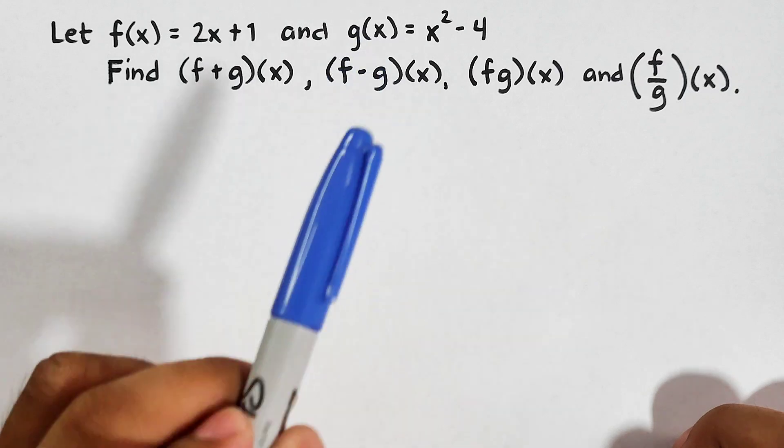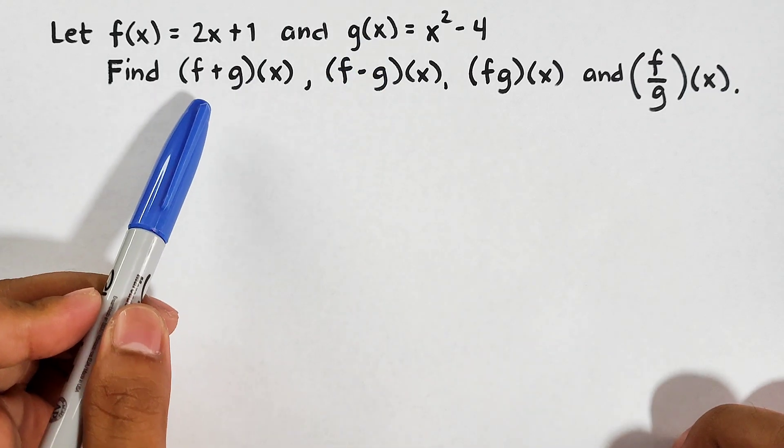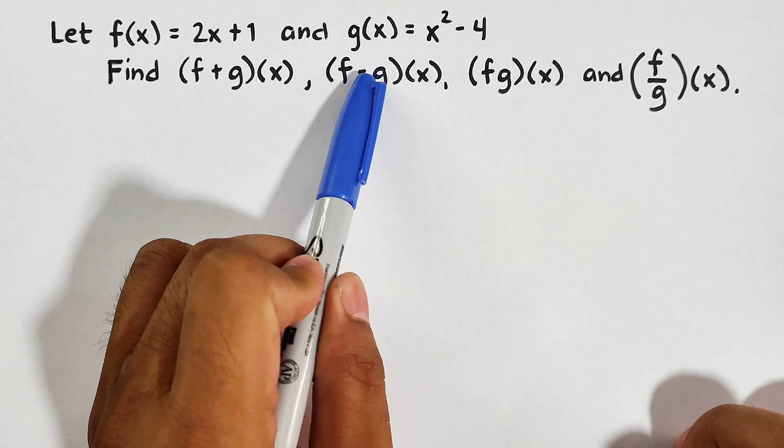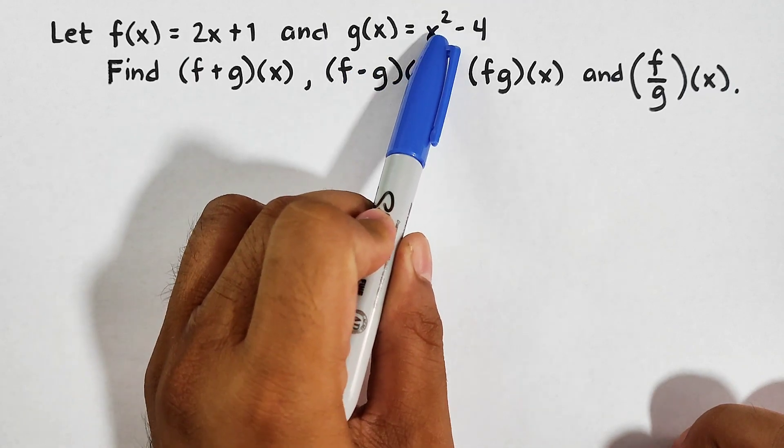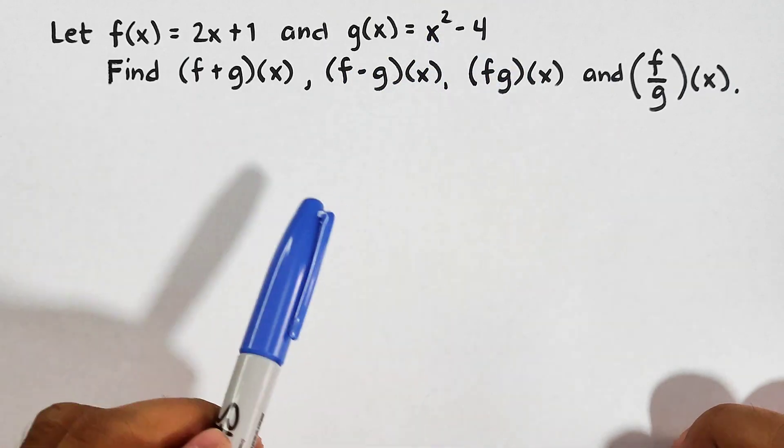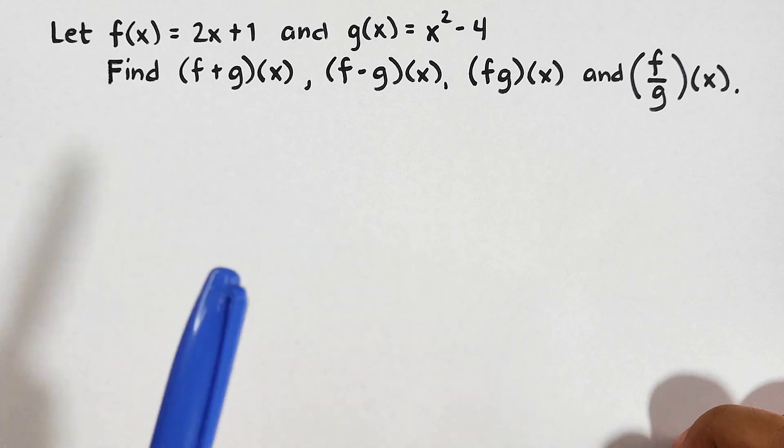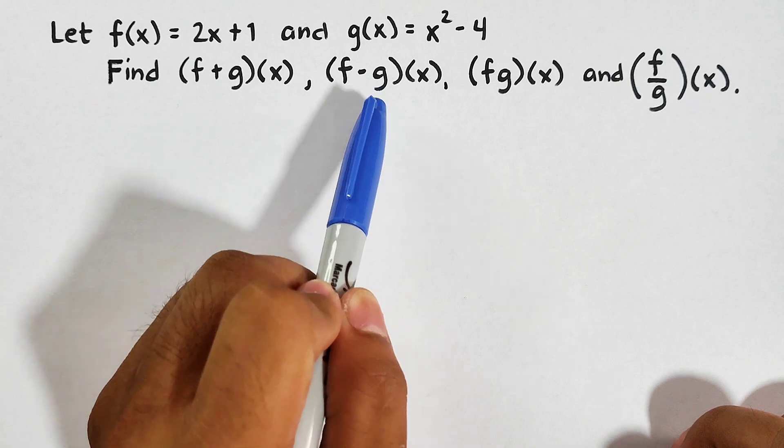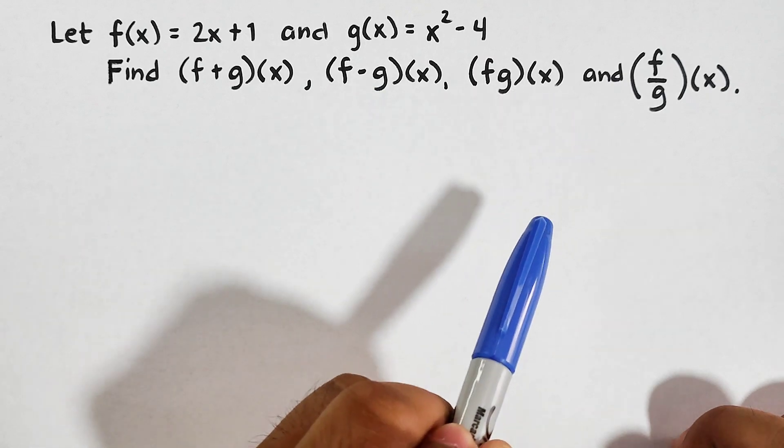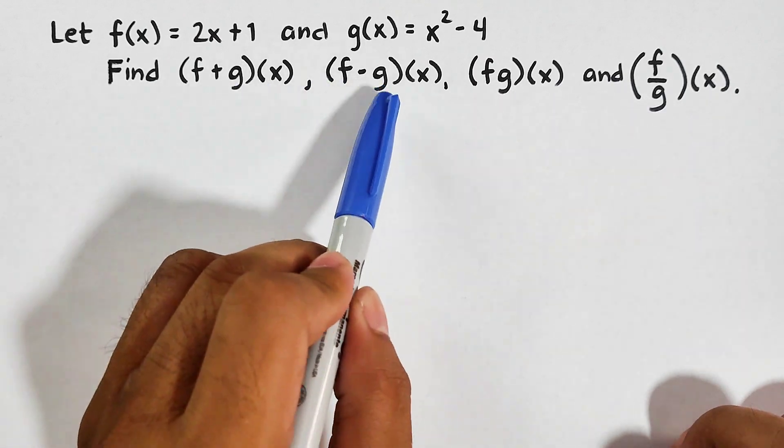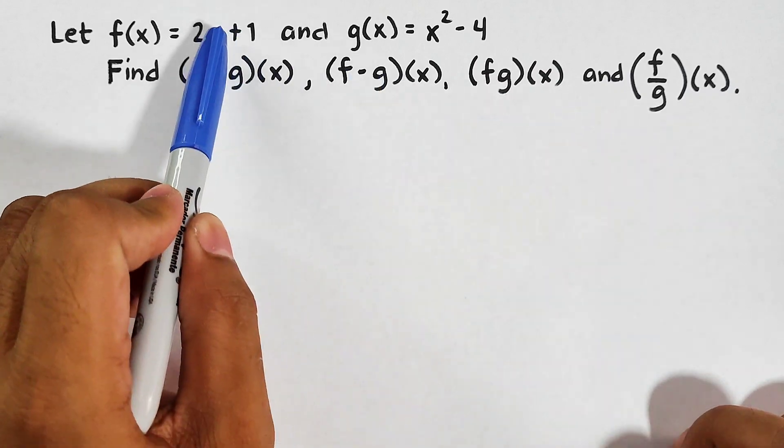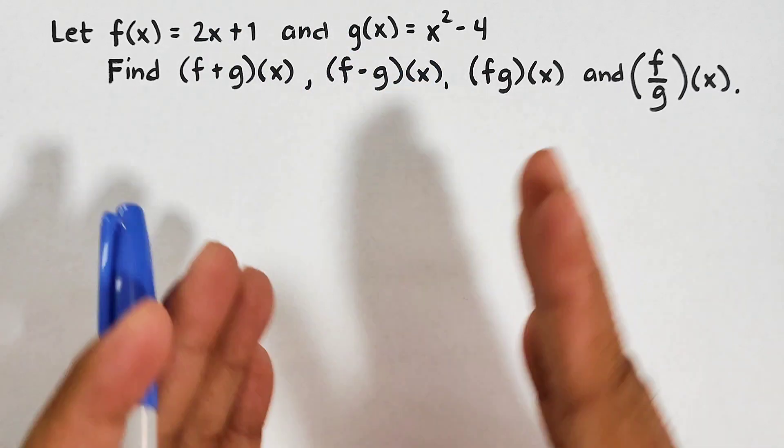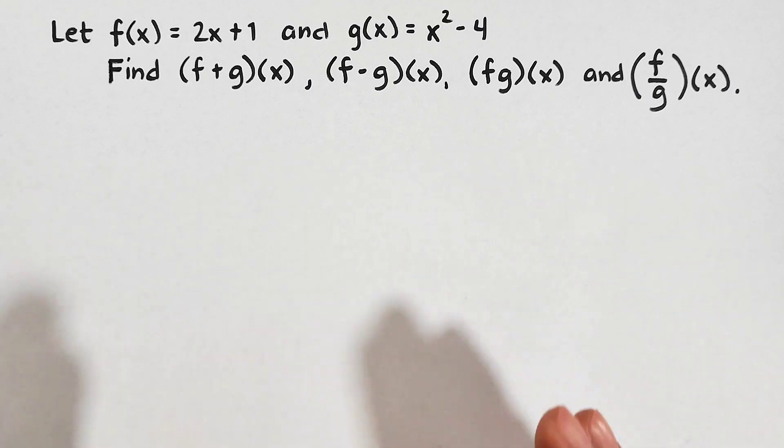So what we have here are two functions, function f and function g. For function f, we have f(x) = 2x + 1, while in function g, we have g(x) = x² - 4. And we are asked to find these four operations. The first is addition, subtraction, multiplication, and division. We're going to add, subtract, multiply, and divide these two functions. But bear with me, in these four different operations, the arrangement is very important.